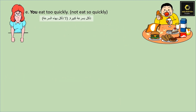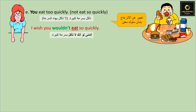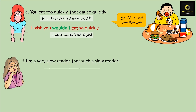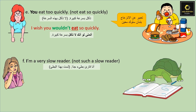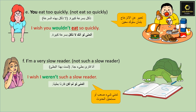You eat too quickly. We're going to use 'not eat so quickly'. I wish you wouldn't eat so quickly. I am a very slow reader. We're going to use 'not such a slow reader'. I wish I weren't such a slow reader. عم بتمنى شيء بالحاضر.